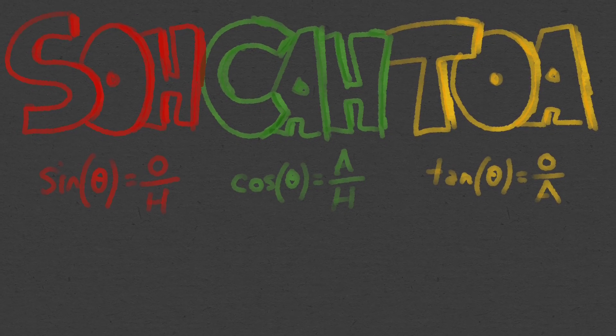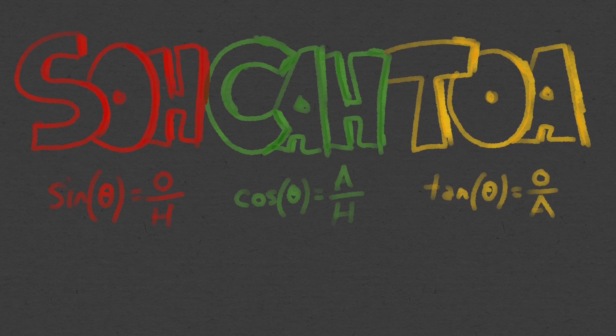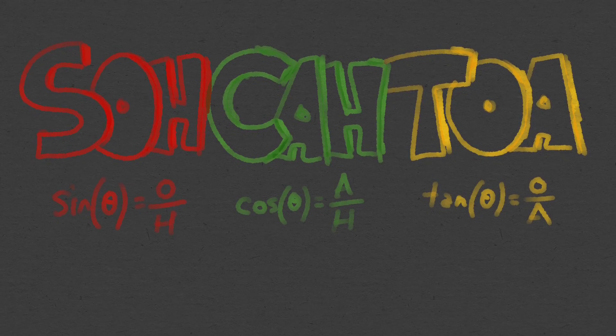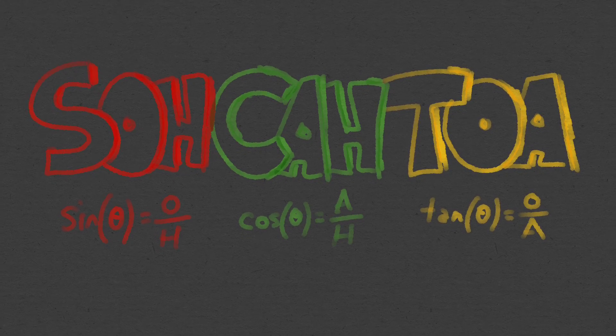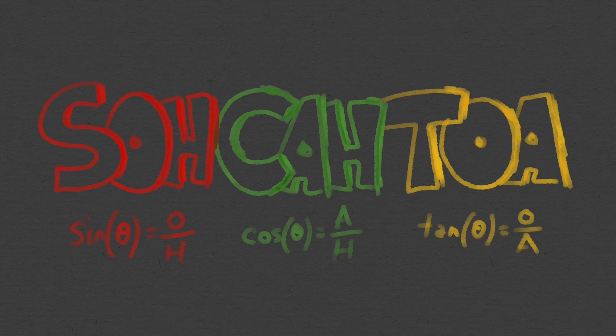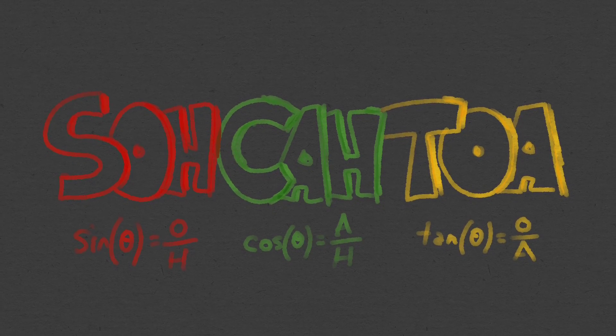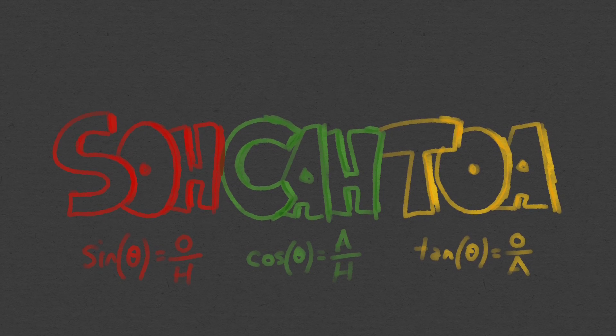Here's an important one for you guys to remember as well. This can help you remember: SOHCAHTOA. So SOH means sine equals O over H, CAH means cos equals A over H and TOA means tan equals O over A. So that's a great one to remember, SOHCAHTOA.